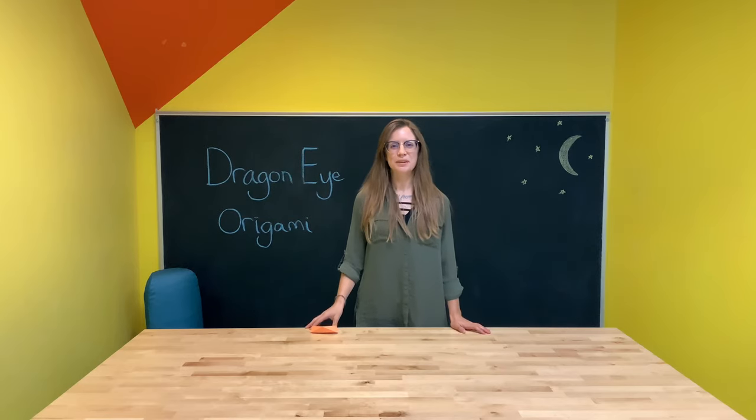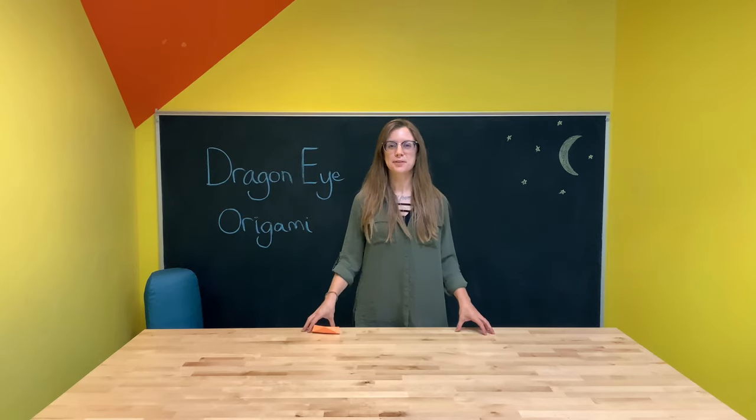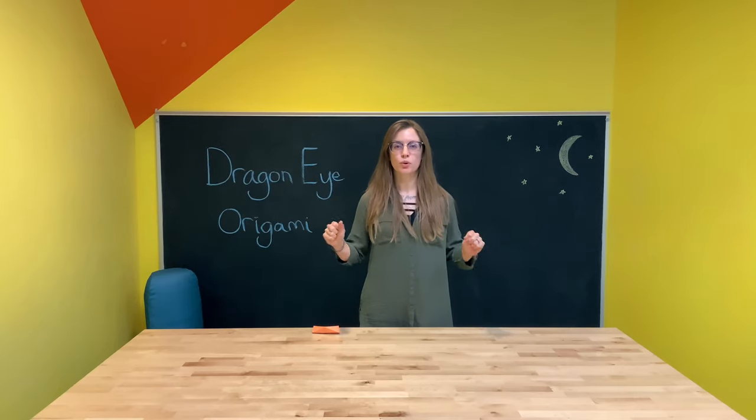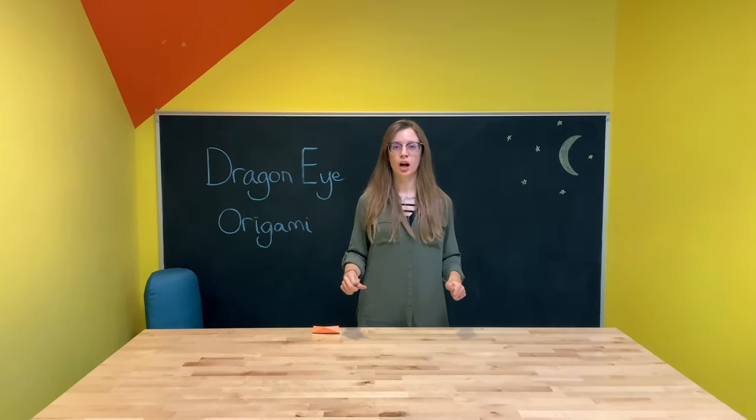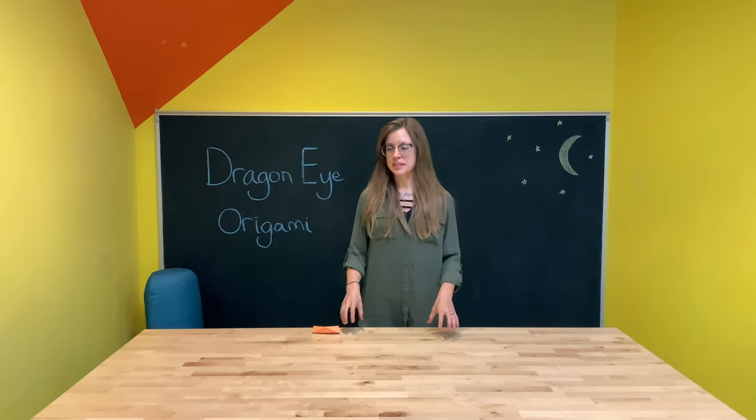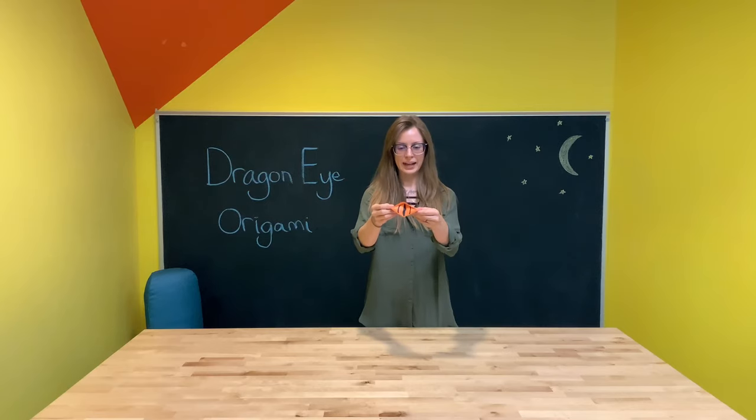Hey guys, it's Allie and welcome to Wednesday's Take and Make Crafts for Kids with the Rapid City Public Library. Today we're going to be doing some more origami. We practiced our origami a few weeks ago when we made those cool paper cranes. But today we're going to be making neat blinking dragon eyes.